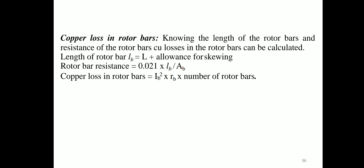Copper loss in rotor bars is calculated knowing the length and resistance of the rotor bars. Length of rotor bar: Lb = L + allowance for skewing. Rotor bar resistance: Rb = 0.021 × Lb / Ab. Copper loss in rotor bars = Ib² × Rb × number of rotor bars.